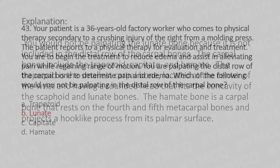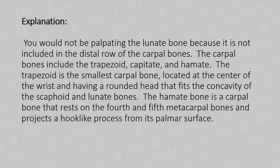Explanation: You would not be palpating the lunate bone because it is not included in the distal row of the carpal bones. The distal carpal bones include the trapezoid, capitate, and hamate. The capitate is a small carpal bone located at the center of the wrist with a round head that fits the concavity of the scaphoid and lunate. The hamate is a carpal bone that rests on the fourth and fifth metacarpal bones and projects a hook-like process from its palmar surface.